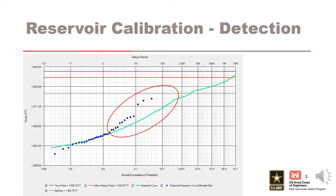Before running a full uncertainty simulation in RMC-RFA, it is important to run a few preliminary calibration runs using the expected only option. The purpose of the calibration runs is to ensure the simulated stage frequency curve fits well with the empirical stage frequency curve derived previously in the empirical stage frequency analysis section. If the simulated stage frequency curve plots well compared to the observed data, we will have more confidence in the estimated exceedance probabilities for much rarer flood events, such as those that would cause overtopping.